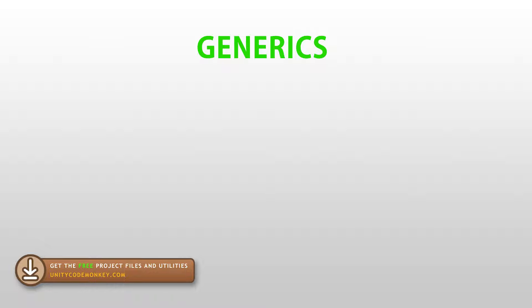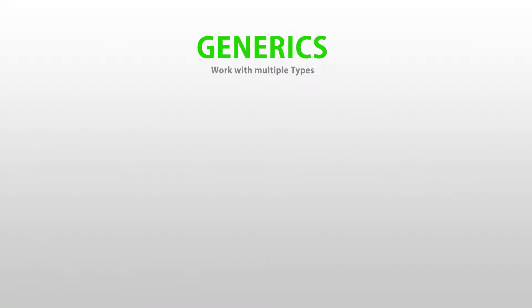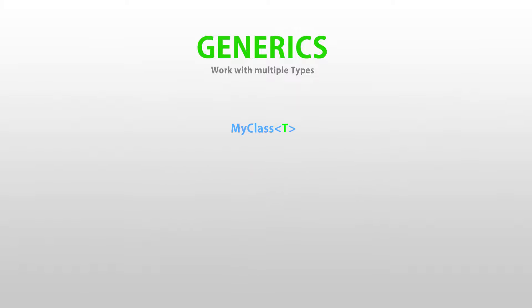Generics are a great feature of C# in order to help you write more generic code that can be used in many scenarios. What they allow you to do is write your class or functions in a way that you don't specifically define any particular type. So then, when you use that class or function, you can pass in what type you want it to work with. You can define an entire class or interface as a generic, or just a single method or delegate.